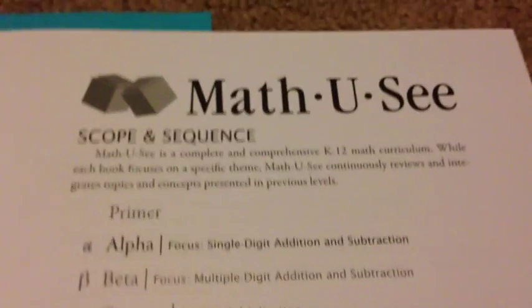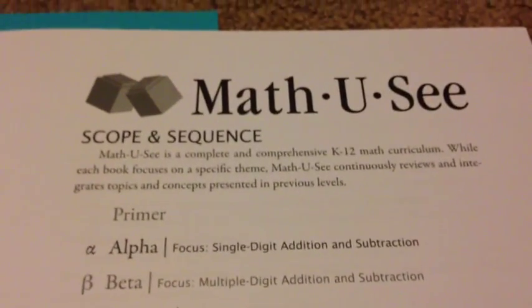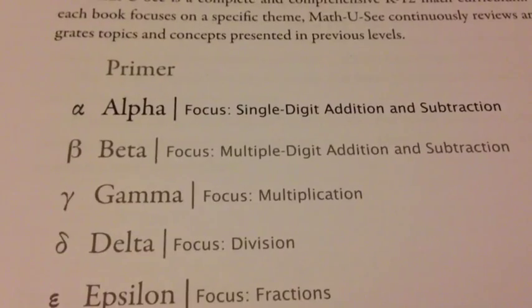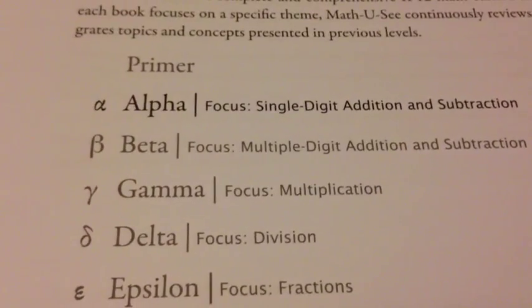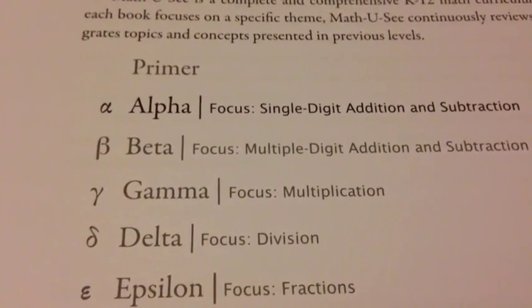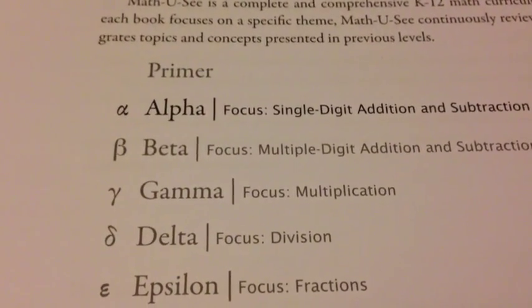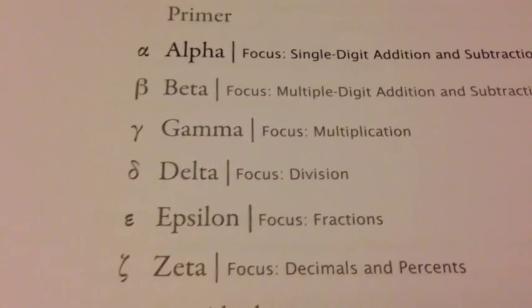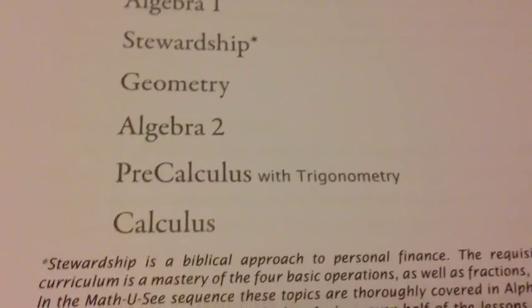These are the different levels of math. It starts off with the Primer, Alpha, Beta, Gamma, Delta, and then it moves on from there, ending with Calculus.